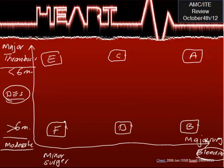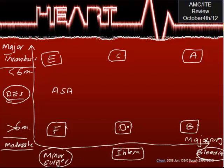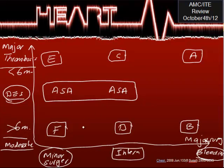Let's start with the minor and intermediate surgery boxes. If you have minor surgery, whether it is moderate or major thrombosis risk, you will continue with aspirin — don't stop it. The same applies to intermediate surgery: whether it's moderate or major thrombosis risk, continue with aspirin. So you continue aspirin whether the surgery is minor — such as dental, dermatological, or cataract surgery — or even intermediate, such as GI surgery or endoscopy.